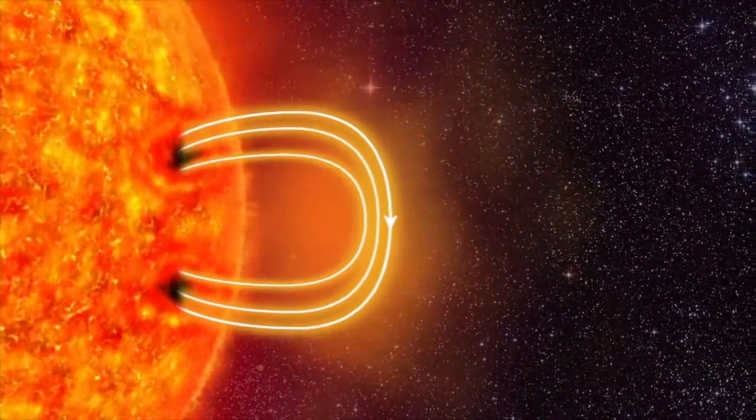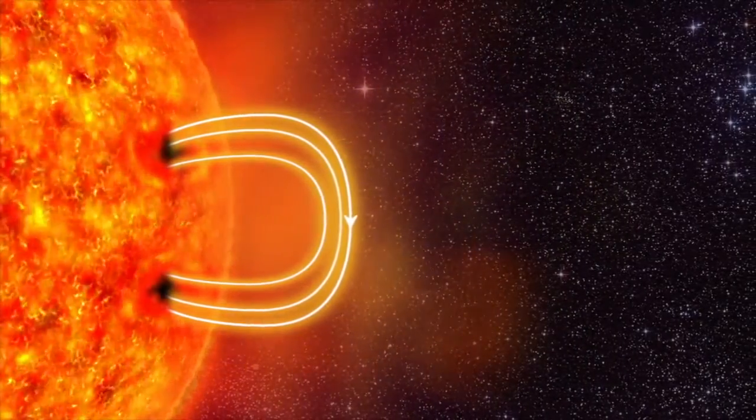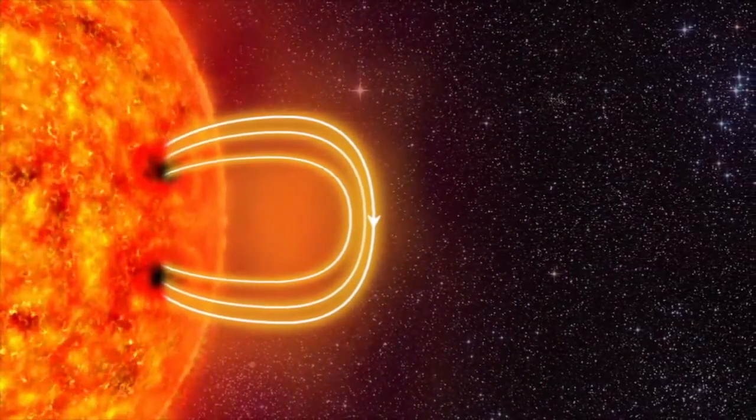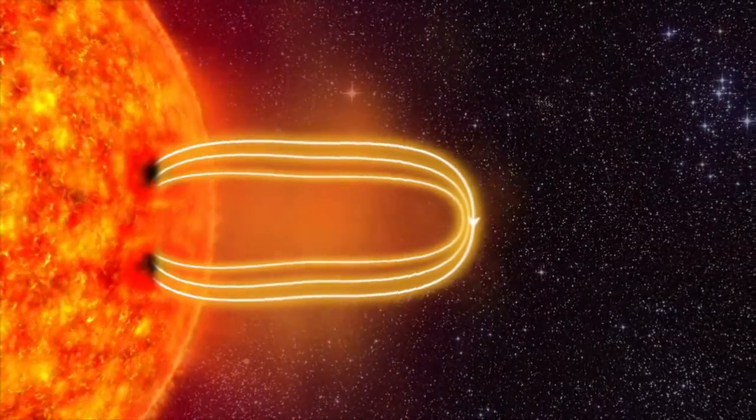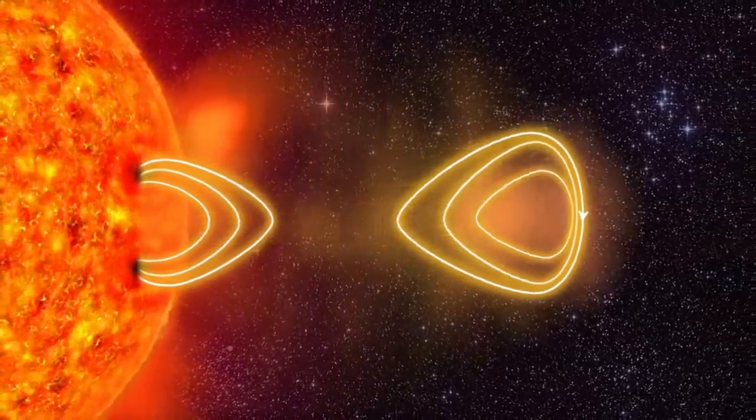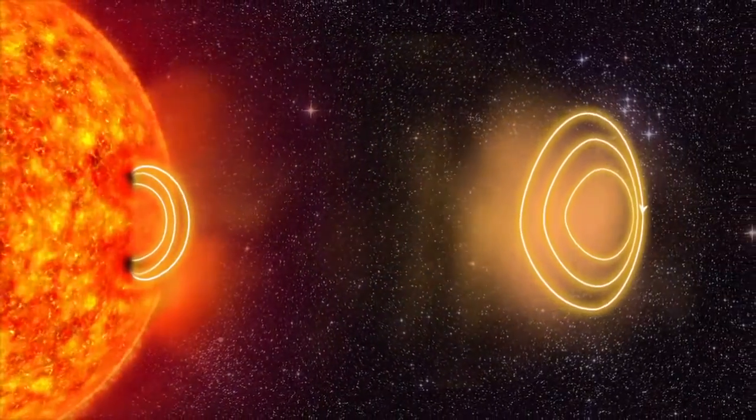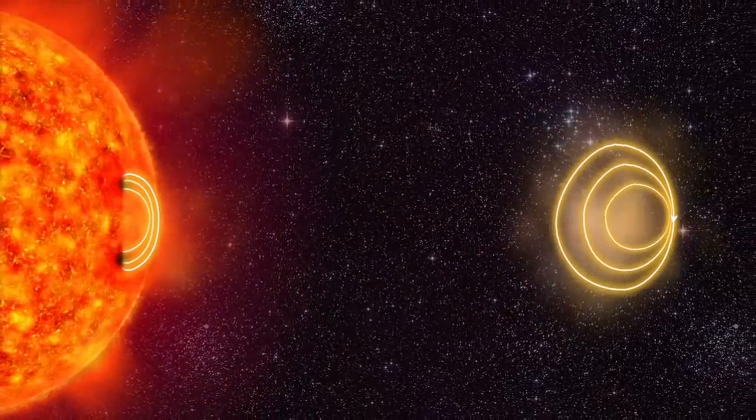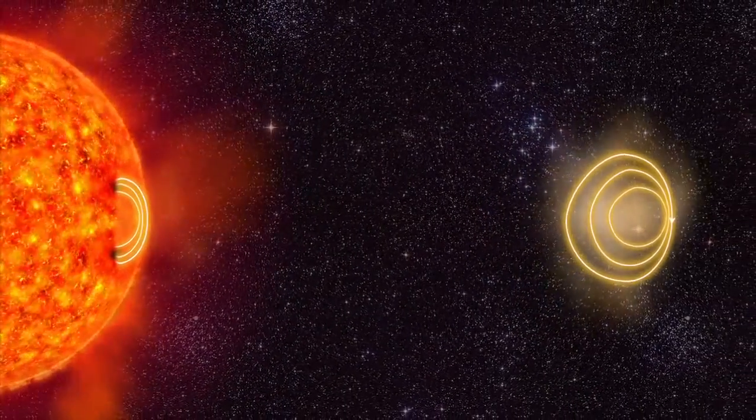The plasma drags the magnetic field further outwards. The magnetic field stretches and twists like a rubber band. And then the rubber band breaks. Several billion tons of plasma is hurled out from the Sun. This is called a solar storm.